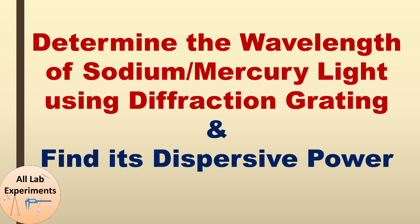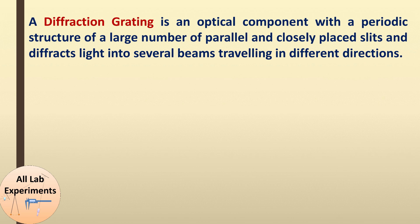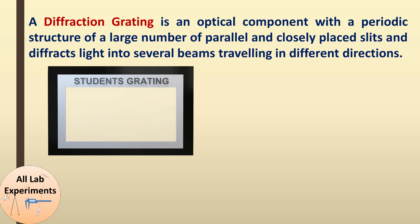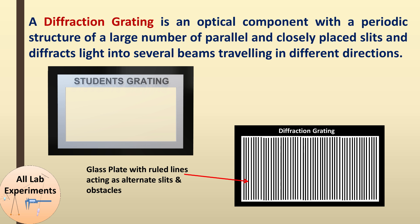Basically, what is a diffraction grating? It is an optical component with a periodic structure of a large number of parallel and closely placed slits which diffracts light into several beams traveling in different directions. This grating looks like a glass piece, but the glassy part at the center is not normal glass — it contains very fine slits.